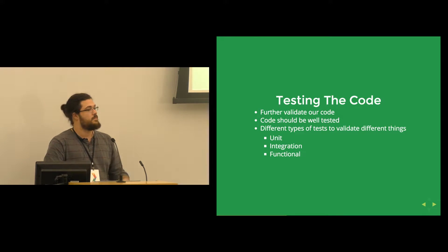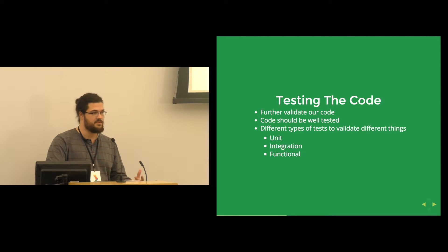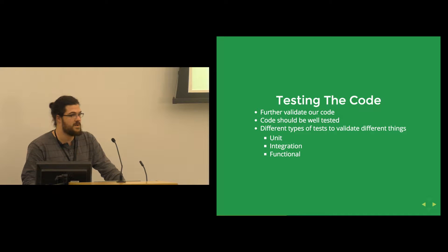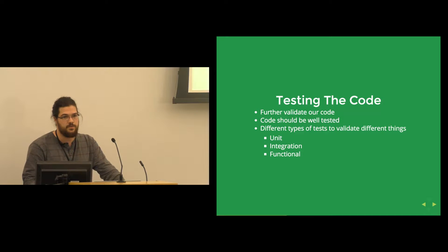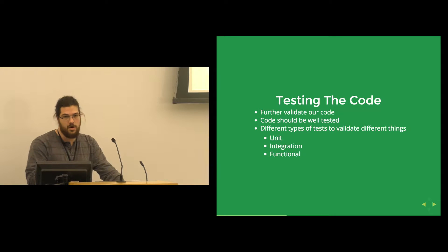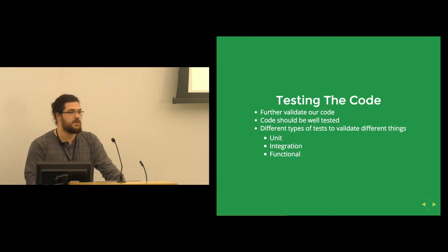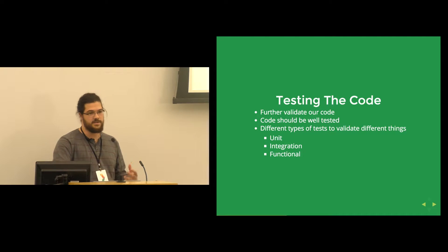The next thing we'll do is test our code. Now that we've compiled our code and gotten that far, we have further validation to do. We want our code to be well tested, especially when talking about CI, because the more test coverage you have, the better tested your code is, and the more value you get out of the CI process and automatic testing. There are different types of tests to validate different things about our application — unit tests, integration tests, and functional tests — all of which test various layers of the application.